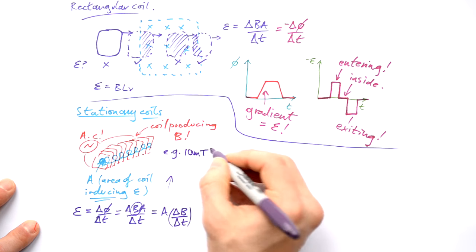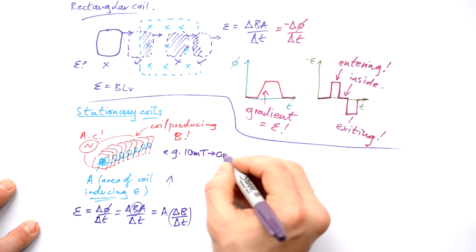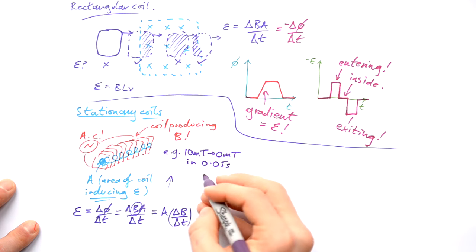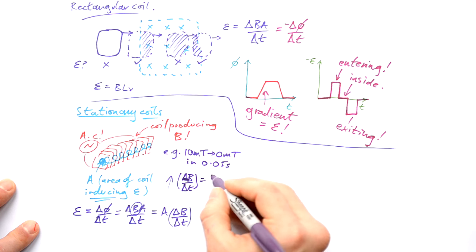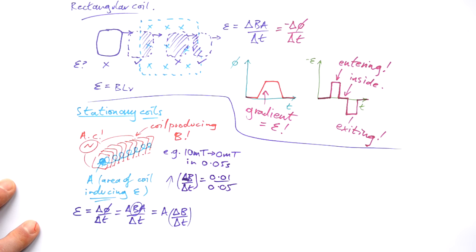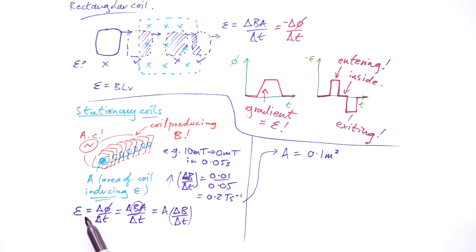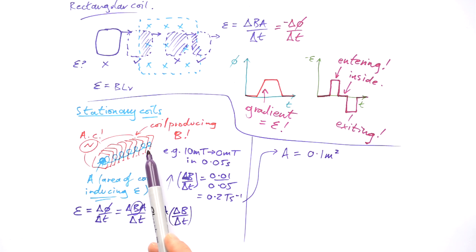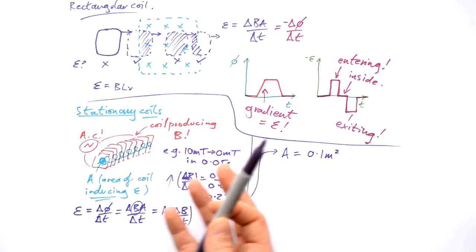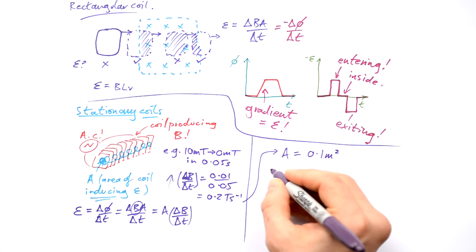So let's say that we have a flux density that goes from 10 milliteslas to zero milliteslas in 50 milliseconds. Then our rate of change of flux density is just going to be 0.01 divided by 0.05, which gives us 0.2. Now let's say that the area of this coil is 0.1 metres squared. So what we have to do is take our rate of change of flux density times by our area. And we should have the EMF induced in the coil. But this EMF is going to be the amount of flux induced in just one loop of the coil, whereas in reality we've got lots of loops or lots of turns. It's very unusual to have just one loop — coils usually have lots of turns, so we have to take this into account.